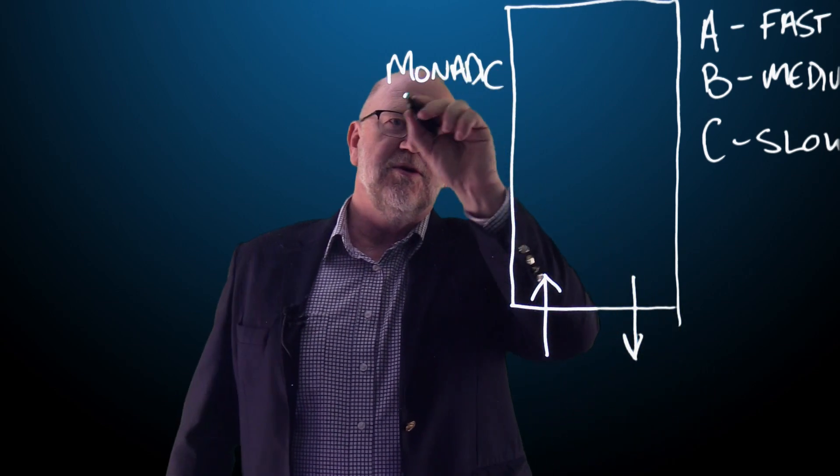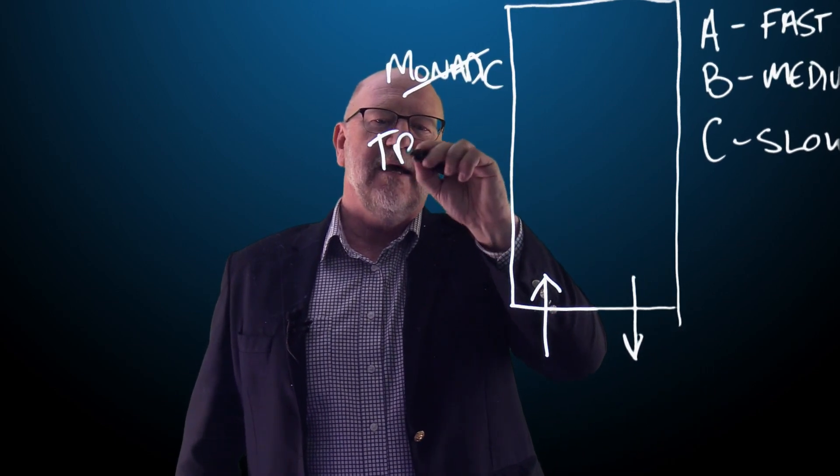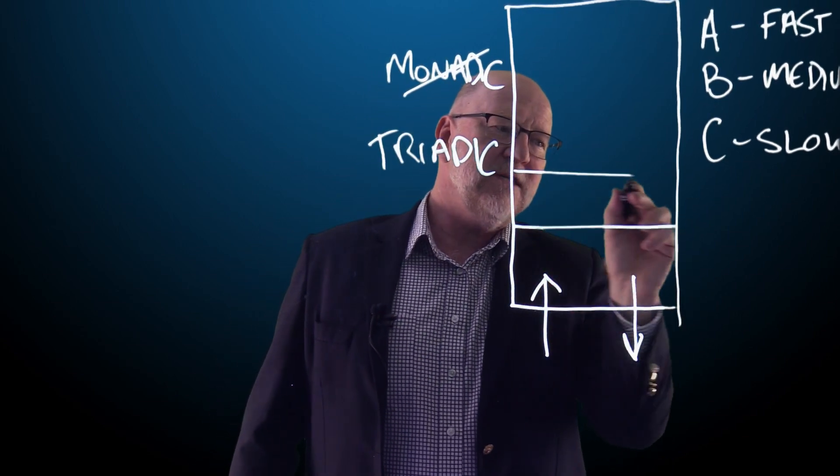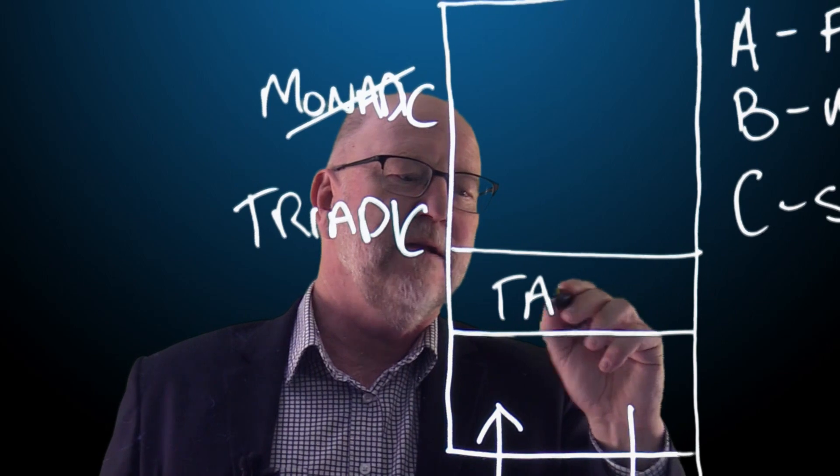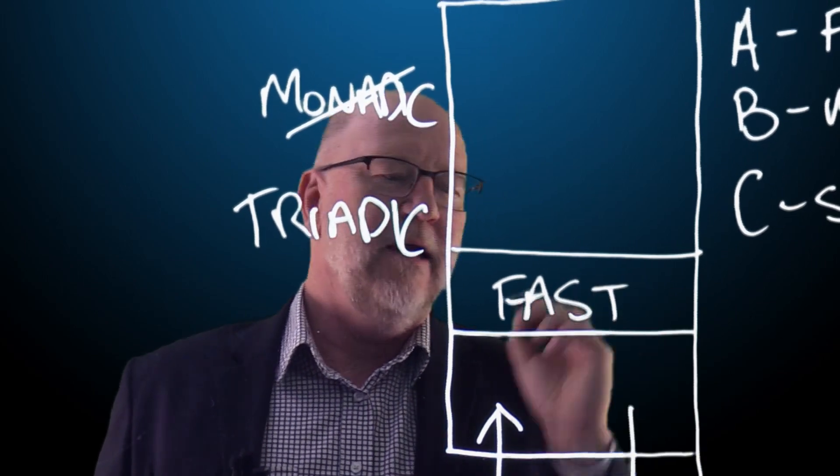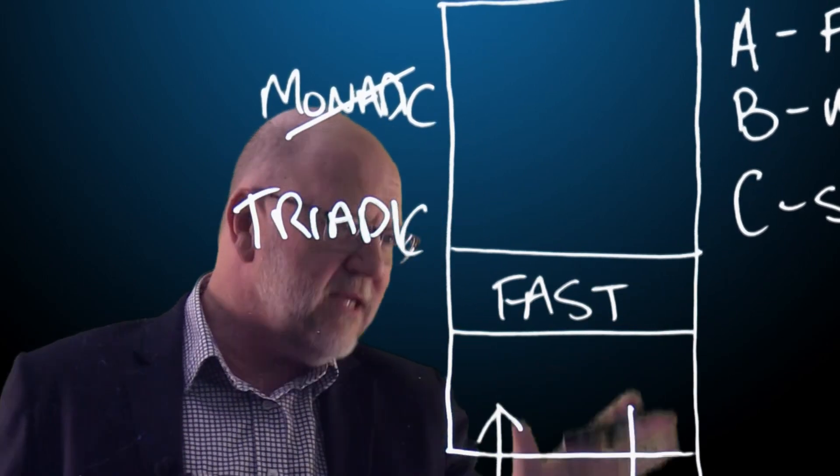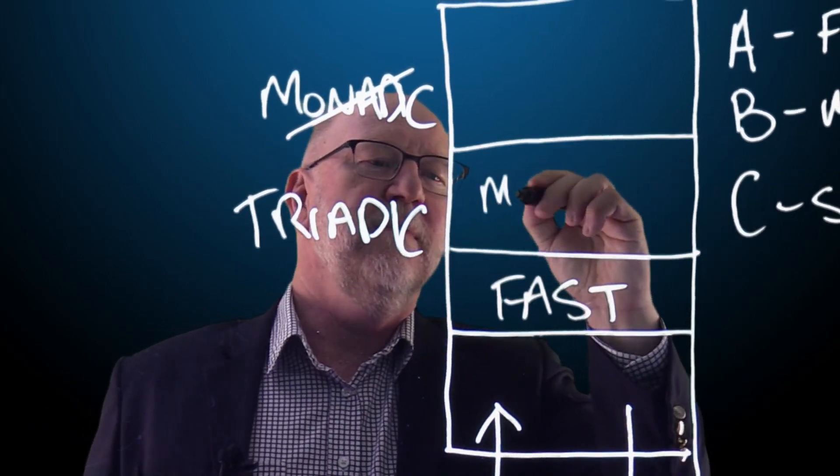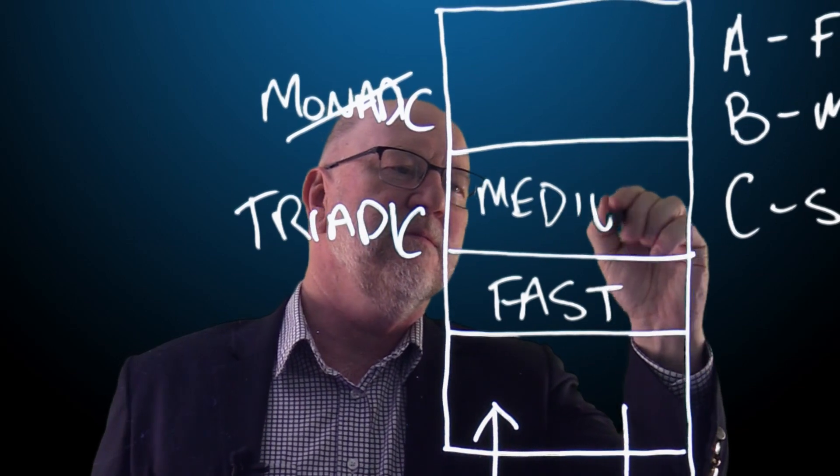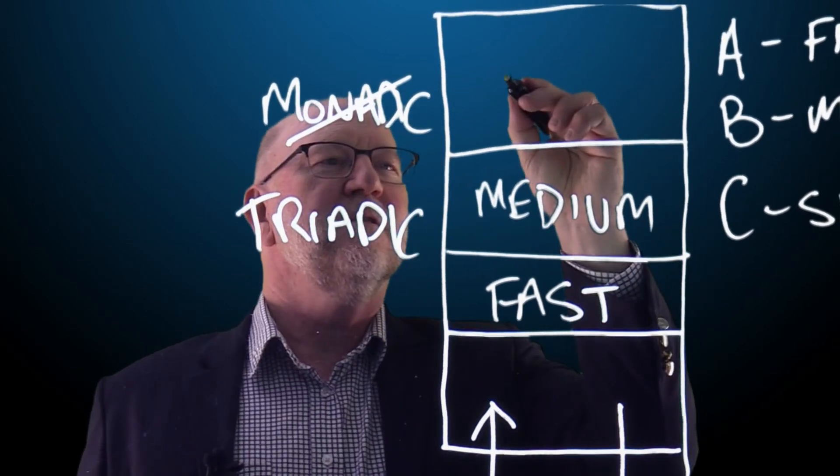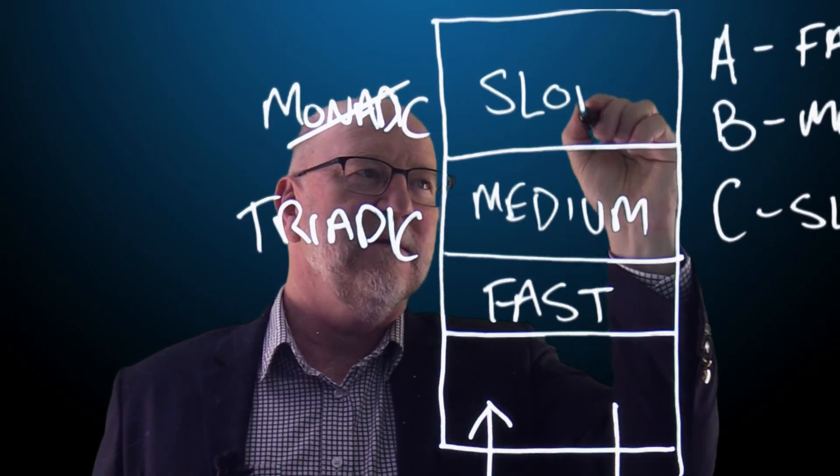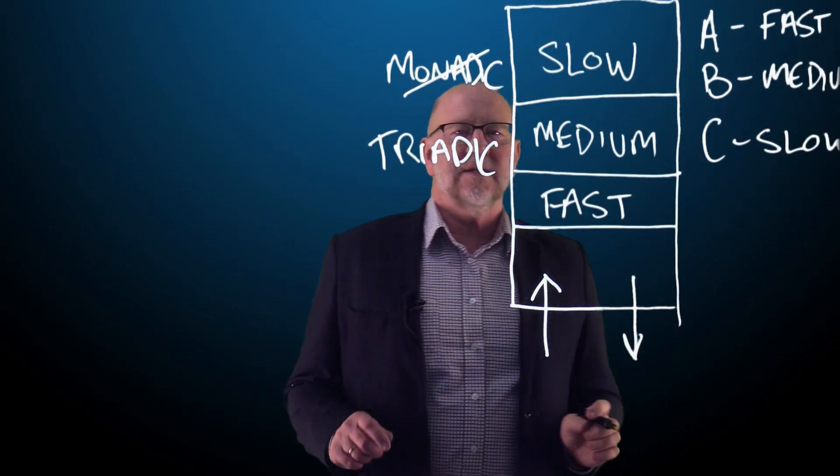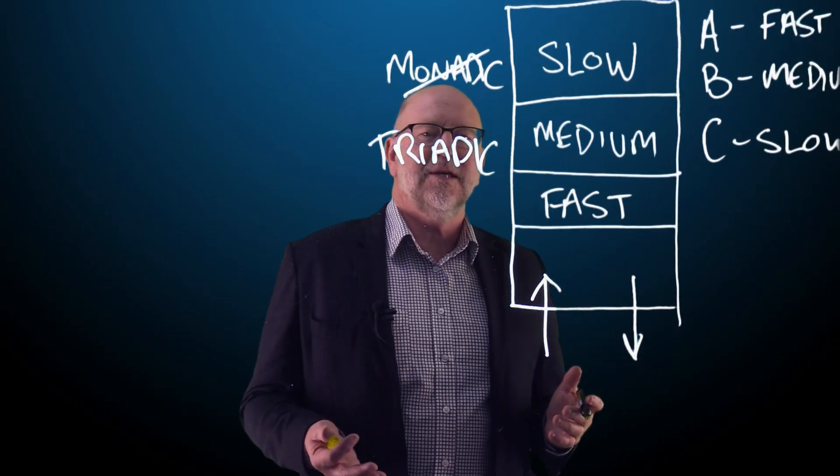If I move to a triadic warehouse, well, guess what? What I'm going to do is put the fast moving goods towards the front. And that then gives us good access to those goods moving in and moving out. Then secondly, we'll put the medium in the middle. And of course, the slow at the back. So when we do this, we're able to actually improve the efficiency of the warehouse.